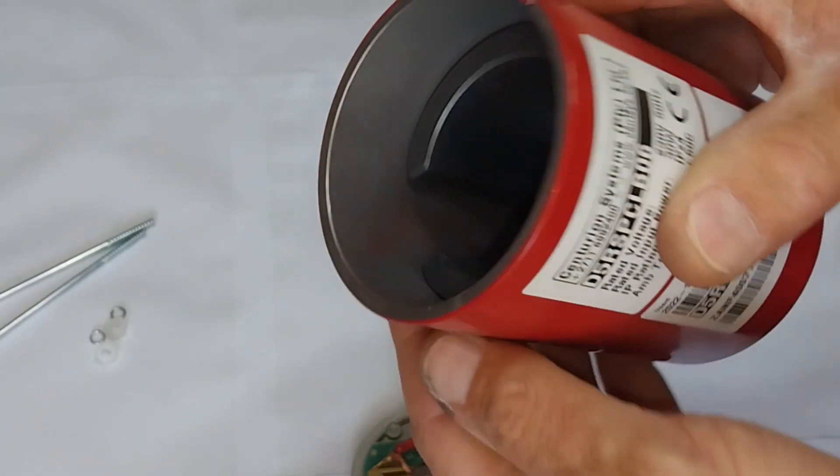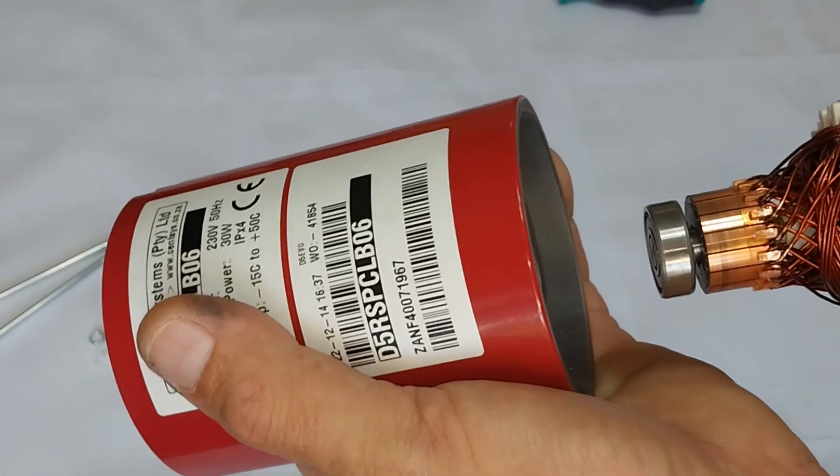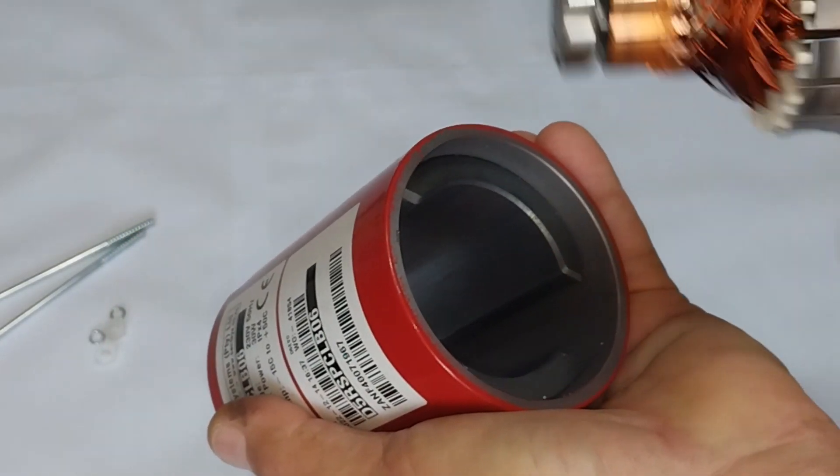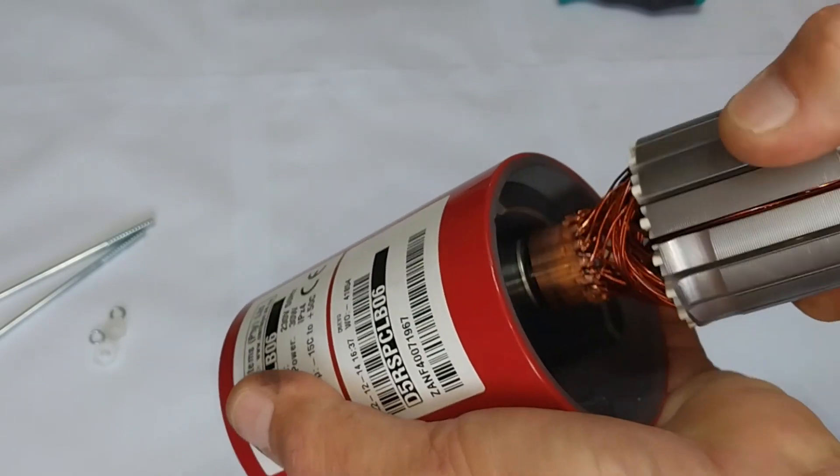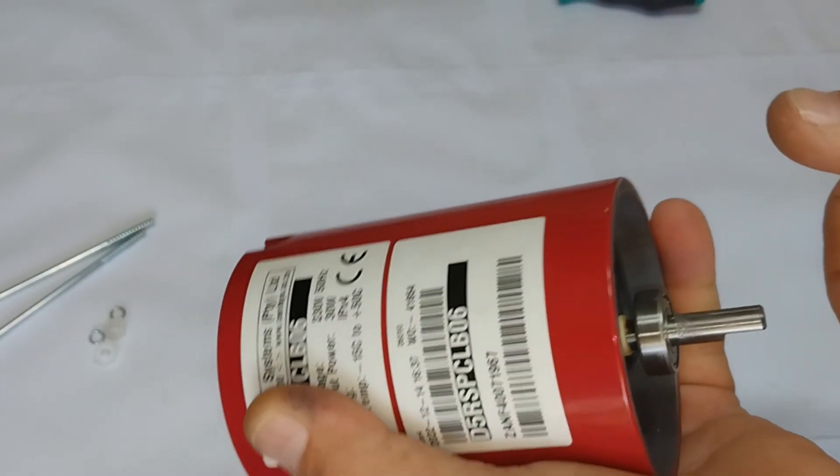So how to fit or assemble the electrical motor. We're going to take the magnet section, take the armature. Make sure that the shallow side is on the front and it's going to go through. Your magnets will pull the armature and it will pull it into place.